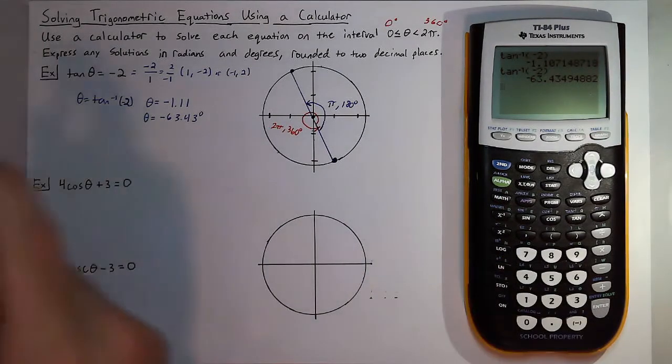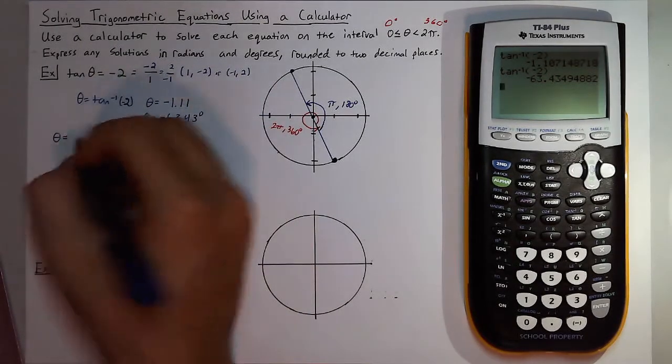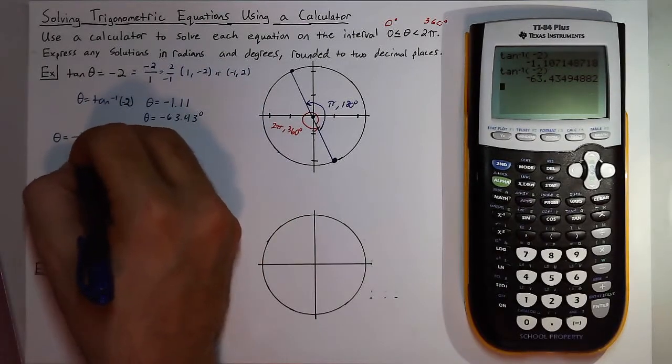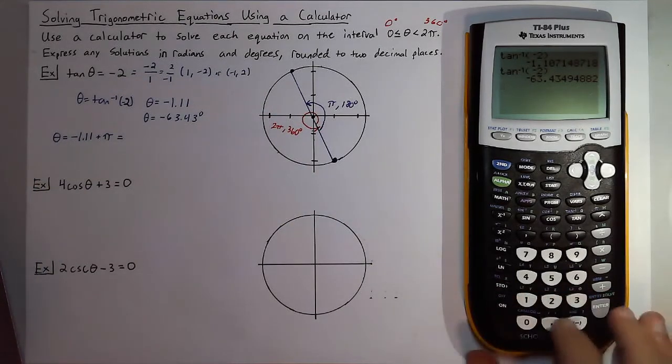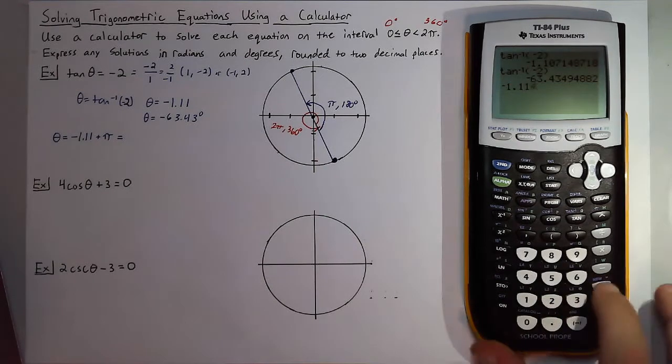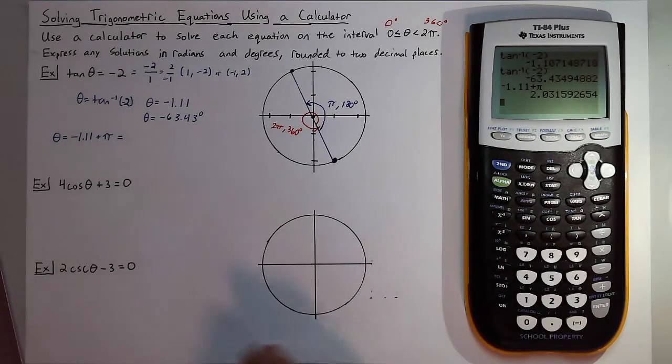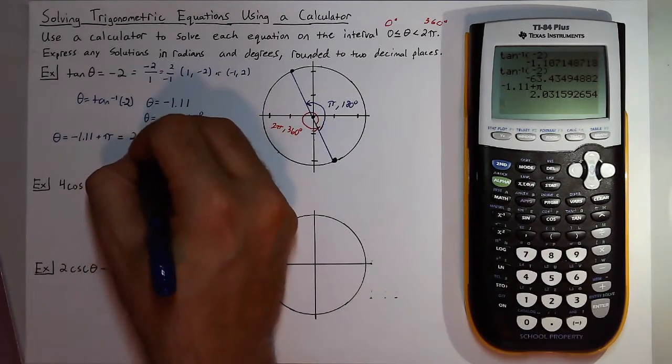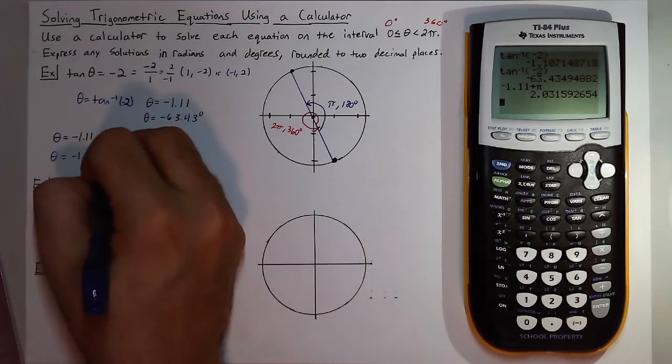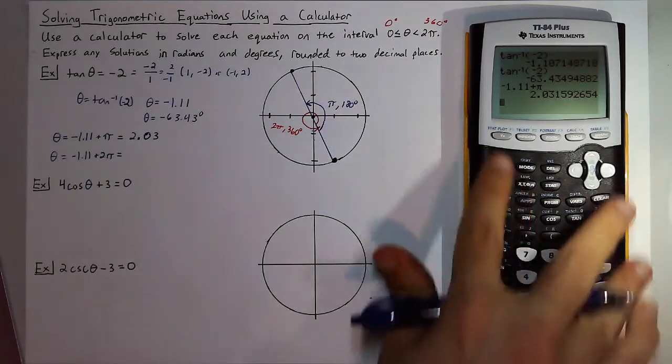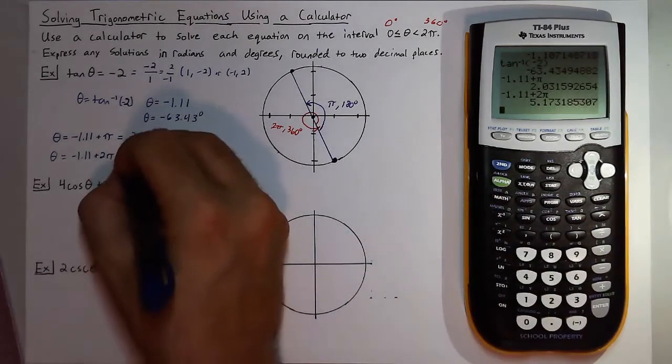So to get both of those solutions, first I'll start with the solution for radians. I can take negative one point one one, add pi to it, so negative one point one one plus pi gives me two point zero three. So that's one solution and my other solution would be that same angle negative one point one one plus two pi, so five point one seven.